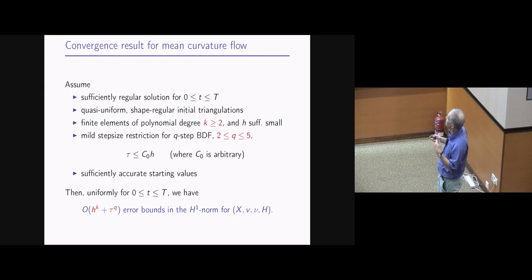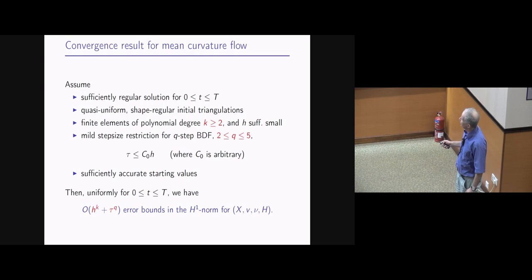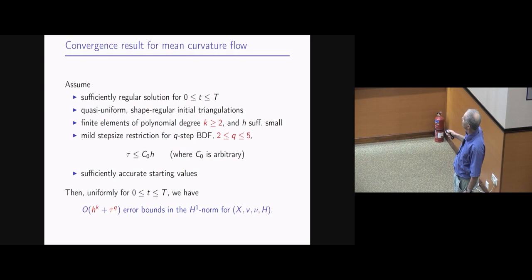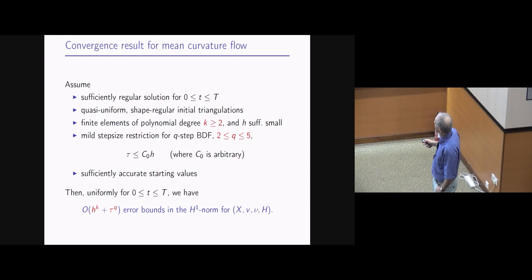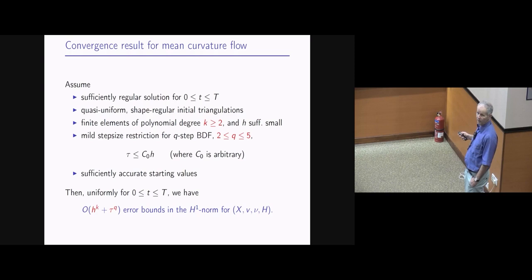Then we get optimal-order error bounds of order H^K + τ^Q, where K is the polynomial degree and Q is the order of the BDF method (Q between 2 and 5). These bounds are valid in the H1 norm — not only for the positions, but also for the velocity, the normal vector, and even for the mean curvature. Getting full optimal-order convergence even for the mean curvature is somewhat amazing.